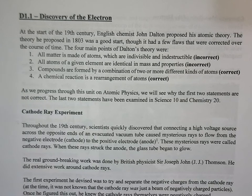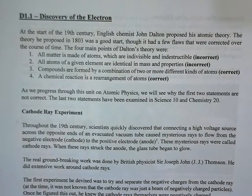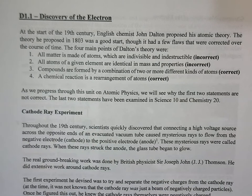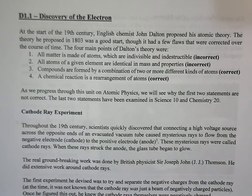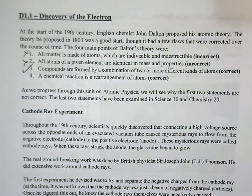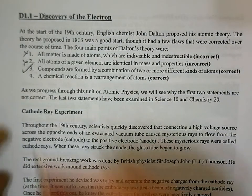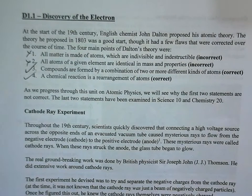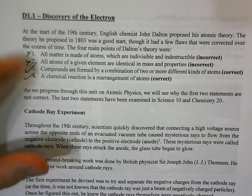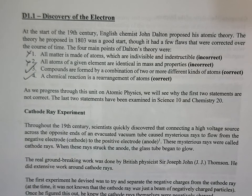Dalton also said all atoms of a given element are identical in mass and properties — that's also incorrect; we'll talk about isotopes later. Compounds are formed by a combination of two or more different kinds of atoms — that is correct. A chemical reaction is just a rearrangement of atoms — also true. So Dalton got two of four right, and we'll look at the incorrect ones in more depth.